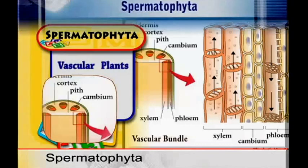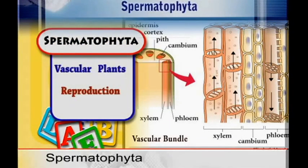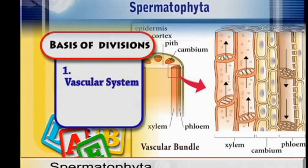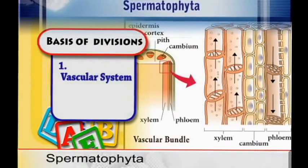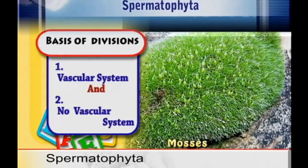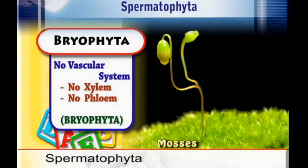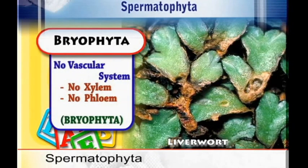We are now going to look at the Spermatophytes, which are vascular plants that reproduce by means of seeds. The plant kingdom is divided into two divisions: organisms that have a vascular system and organisms that do not have a vascular system. Organisms with a vascular system we place into the division Tracheophyta, and those without a vascular system we place into the Bryophytes. The vascular organisms are further subdivided into two groups.